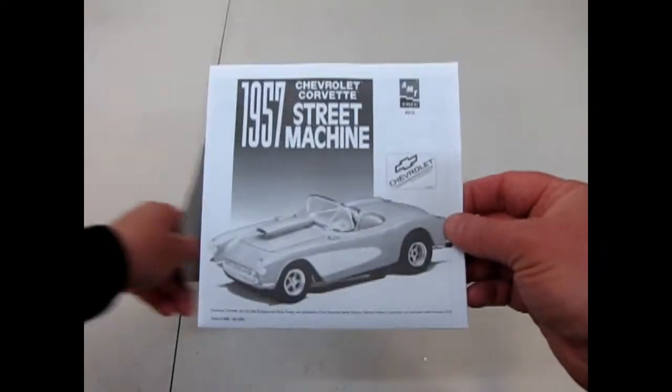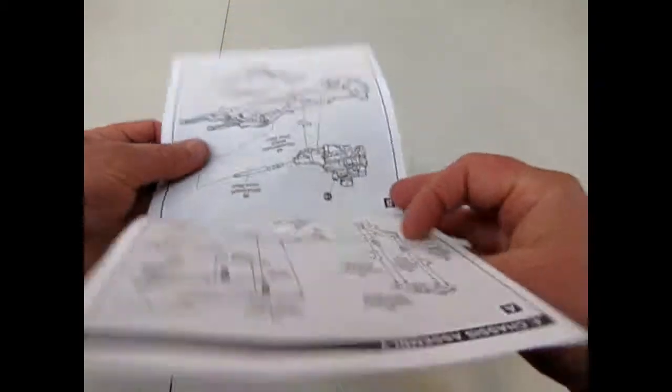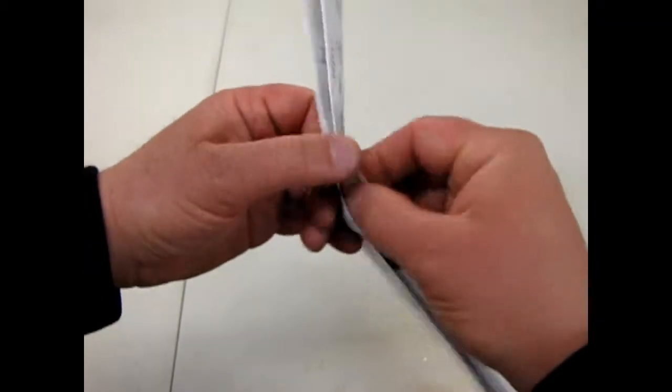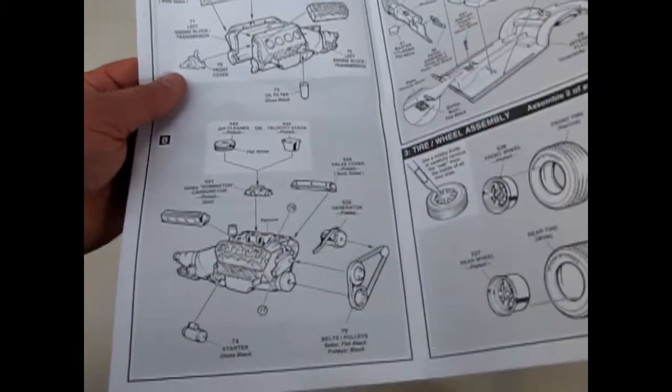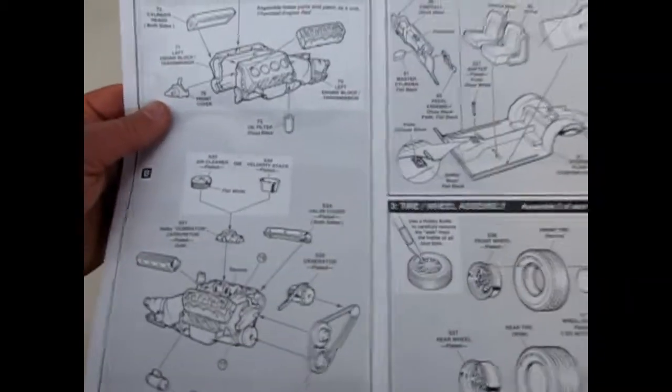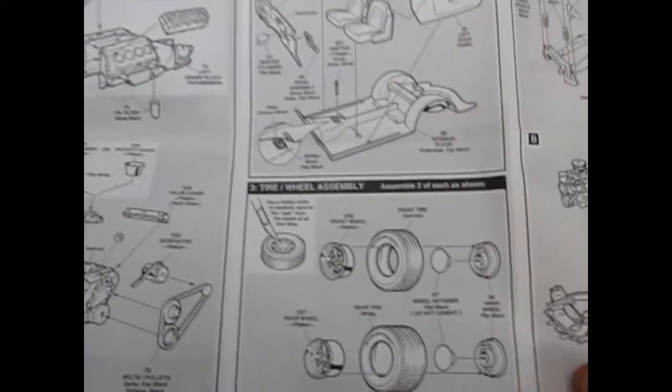Now to start with, we've got these great 57 Street Machine instructions which show this really awesome big block Chevy going together with a lot of detail, much like the Revell kits. Good stuff that gets covered over by valve covers.